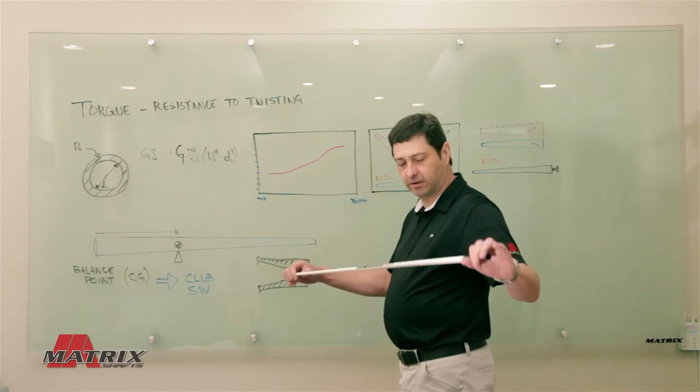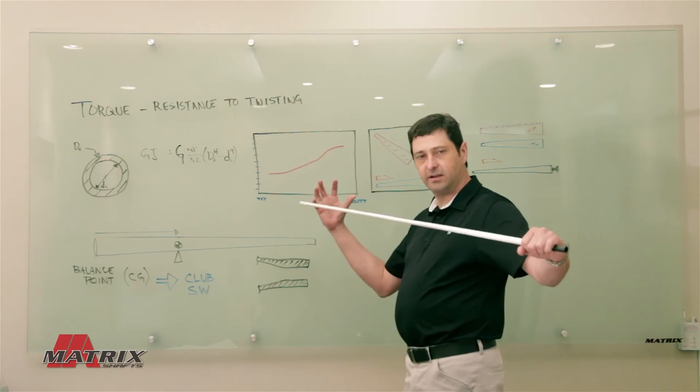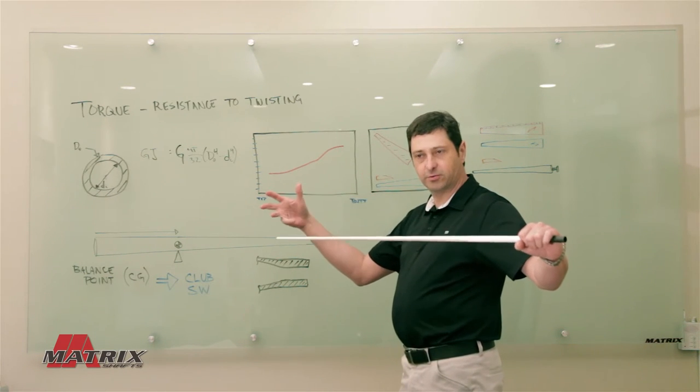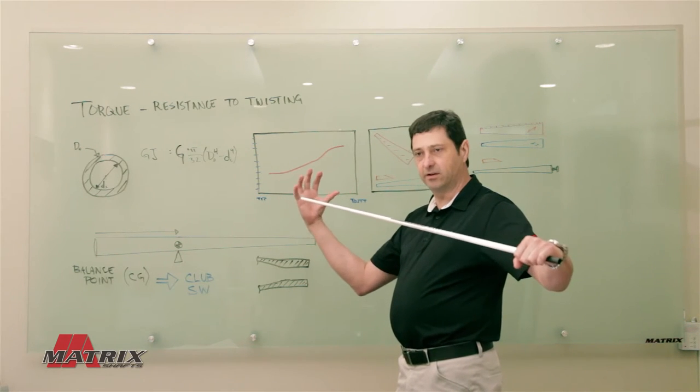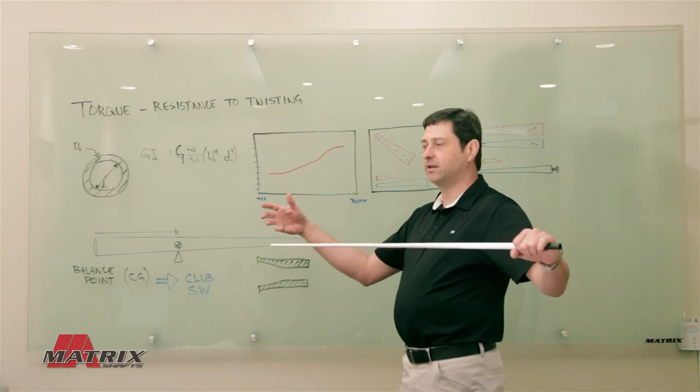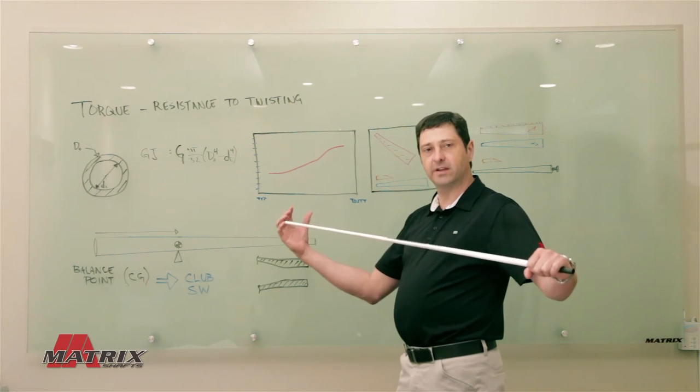If you want to think about torque, if you have a built club and you grab onto the grip, grab onto the head and start twisting the head, a high torque shaft is going to let the head rotate more, and a low torque shaft is going to let the head rotate less.